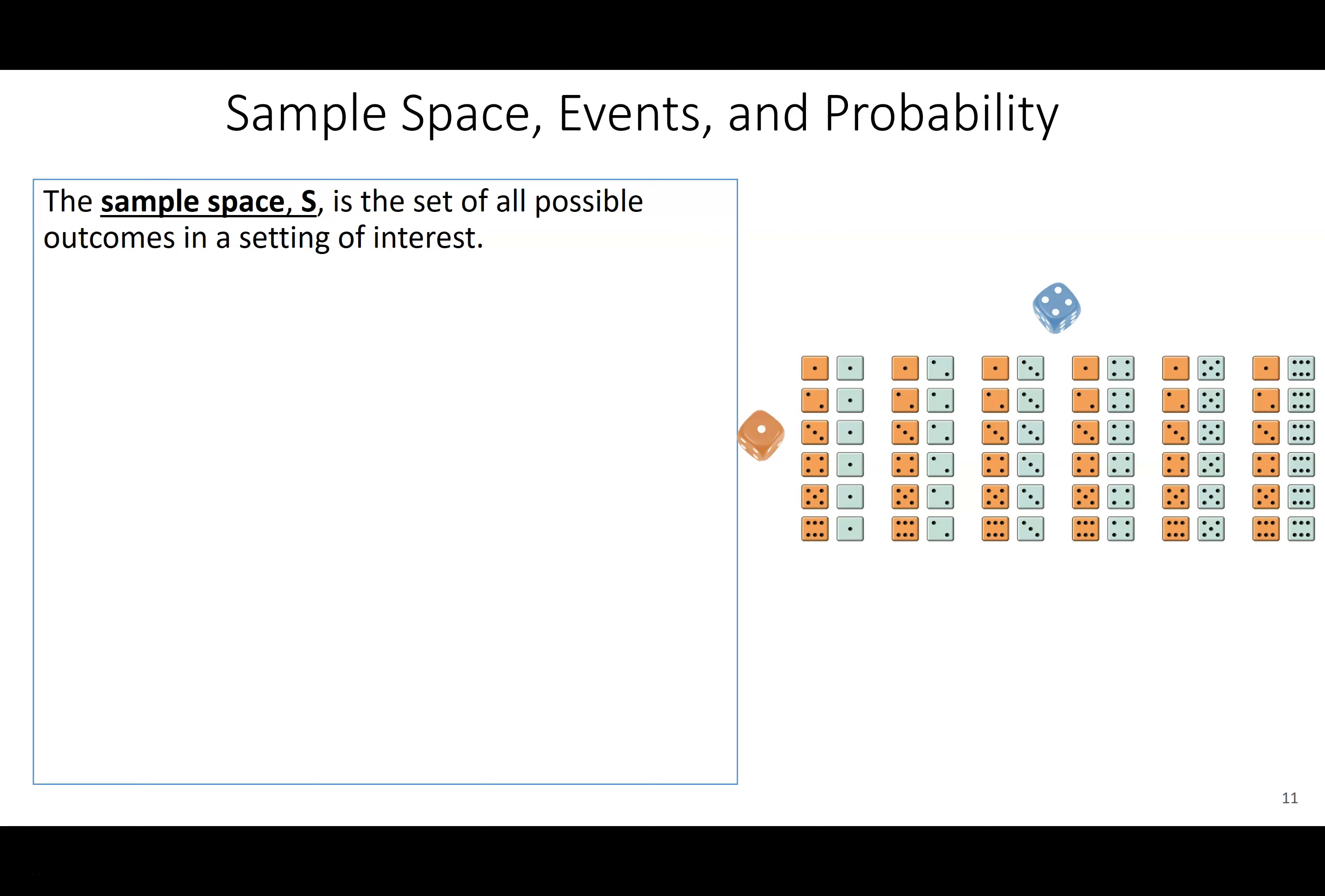So we're going to start by defining the sample space. This is the set of all possible outcomes that could happen. It's written as a curly or italic S. So if I'm just looking at all the outcomes I could have, I could roll a one on the orange and a one on the blue, a one on the orange and a two on the blue, all the way through six on both of them. There would be 36 different combinations. They're shown right here.